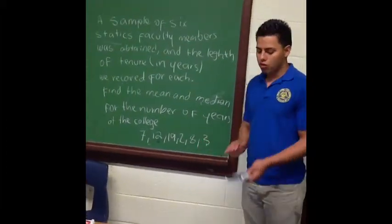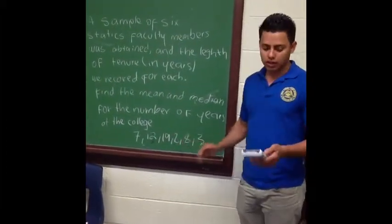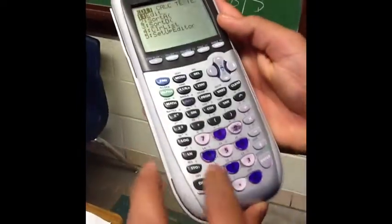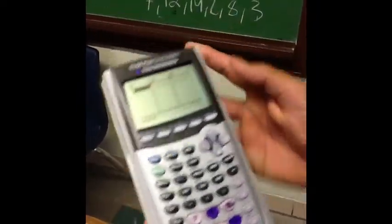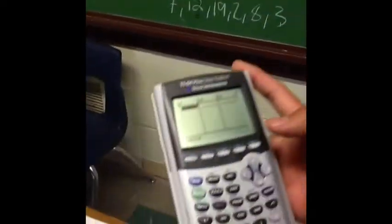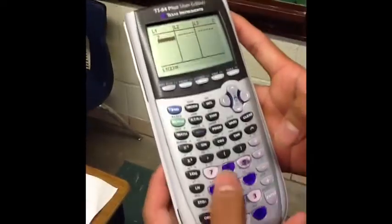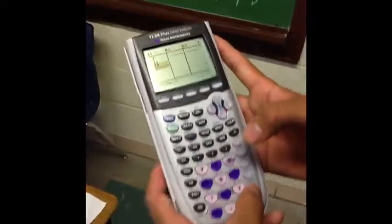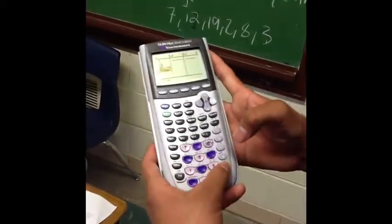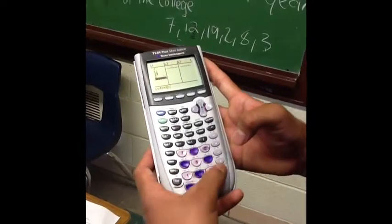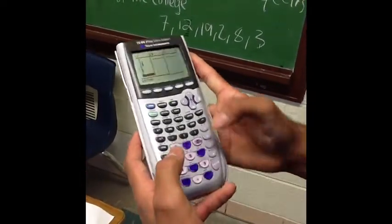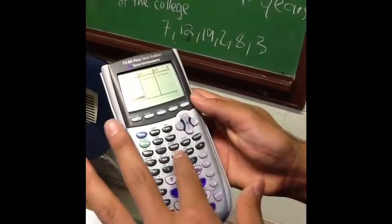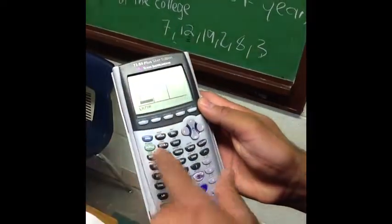How to set the numbers in the calculator: we need to hit stat one and then we put all the numbers like seven enter, twelve enter, nineteen enter, two enter, eight enter, three enter.